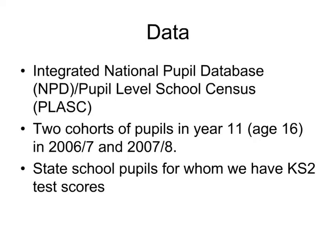The data we used is the English National Pupil Database, linked to the pupil-level school census. This gives us a population of English students — about half a million in each cohort — and we consider two cohorts. The data has very good achievement data: tests at age 11, 14, and 16. It is a bit weaker on describing pupil characteristics, but we have enough to run the models. We are restricting our analysis to state schools only, because not all private schools participate in these tests.